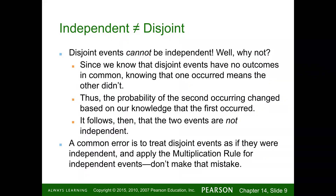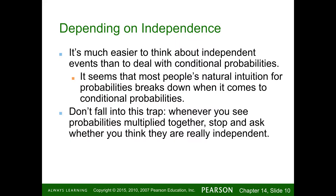You'll probably make that mistake anyway, which is why we'll go over a lot of homework questions. It's much easier to think about independent events than to deal with conditional probabilities. Most people's natural intuition for probabilities breaks down when it becomes conditional. Don't fall into this trap — whenever you see probabilities multiplied together, stop and ask whether they are really independent.